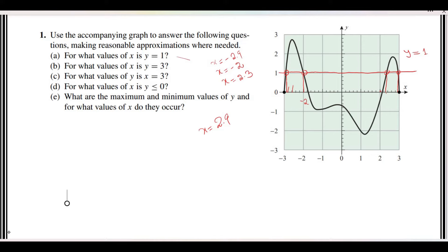The next part is: for what values of x is y = 3? So now with y = 1, y = 2, and y = 3, we draw a line. You can see that y = 3 is not touching the graph at all. That means no x values — we don't have any x values for which y = 3 is touching the graph.